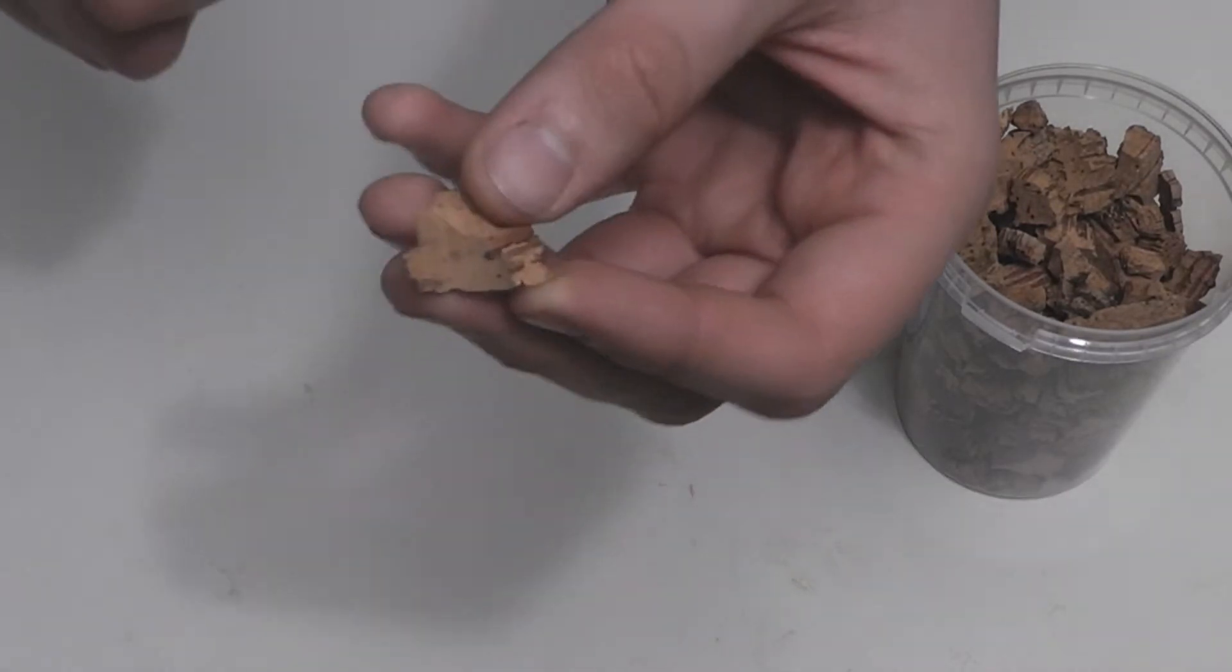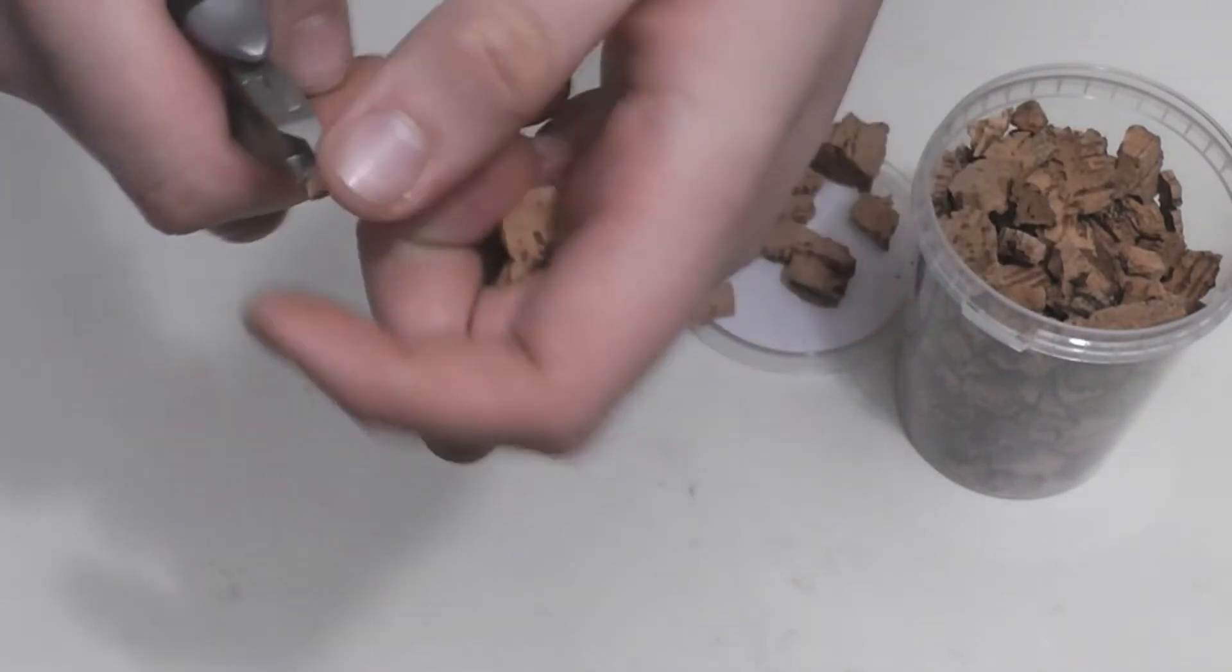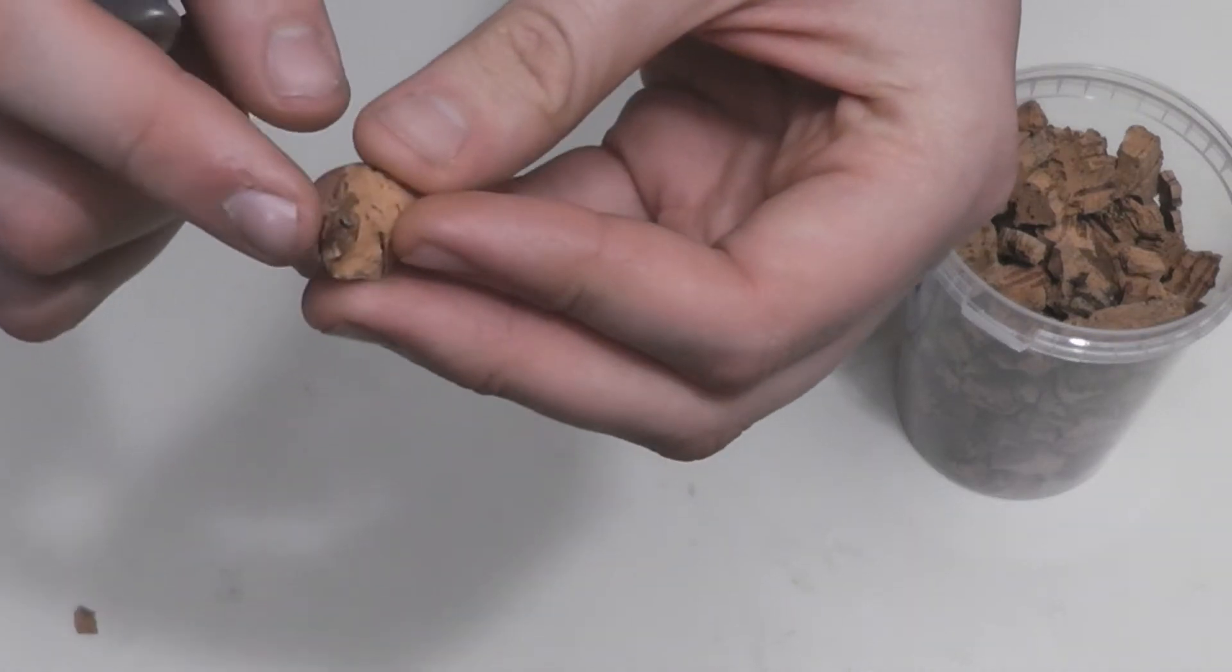Although this is actual bark from the cork tree, it is surprisingly soft and therefore quite easy to cut. This means that you have more freedom to shape them however you want to.